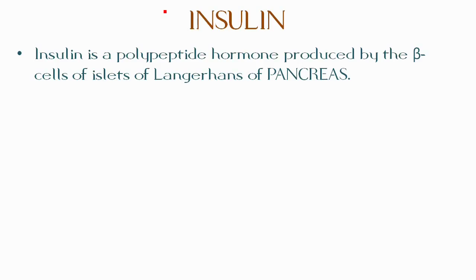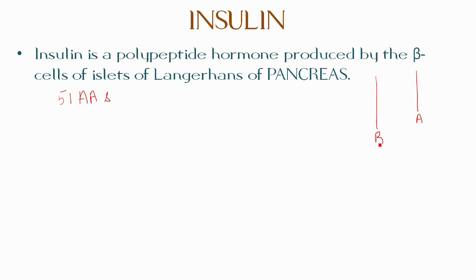Insulin is a polypeptide hormone produced by the beta cells of the Islets of Langerhans of the pancreas. Human insulin contains 51 amino acids arranged in two polypeptide chains, A and B. Chain A has 21 amino acids while chain B has 30 amino acids.